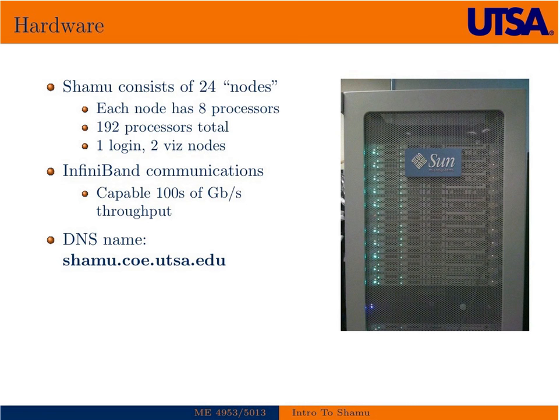Each node is connected to each other and to a file server system through an InfiniBand, which is a fabric communication system capable of hundreds of gigabytes per second throughput depending on the method of communication. This is much faster than Ethernet or anything like that.